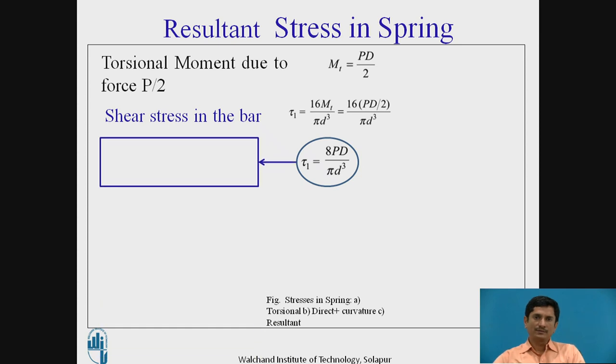Let us see in the figure how tau 1 can be represented. This is the cross section of the spring, axis of the spring, and on this end we can see how the shear stress is distributed. This is a component of torsional shear stress.